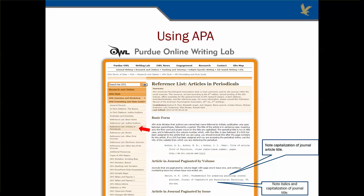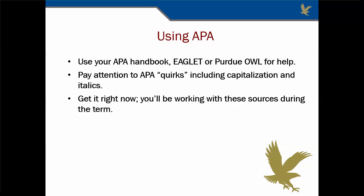Here is a page from the Purdue Online Writing Lab, or OWL. Notice that I found the sample by clicking on the source type, Articles in Periodicals. Simply follow the example here, but make sure you note any specifics regarding capitalization and punctuation of titles. Because you will likely be using many of these sources again, and because APA formatting is a component of your grade, it is important to get it right in the annotated bibliography. Use your APA manual or other resources such as EGLET or the Purdue OWL to help you. Remember that APA has unique ways of capitalizing journal article and book titles. Pay attention to what should be in italics specifically.